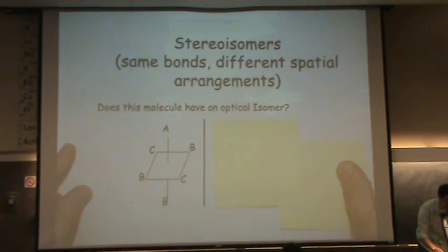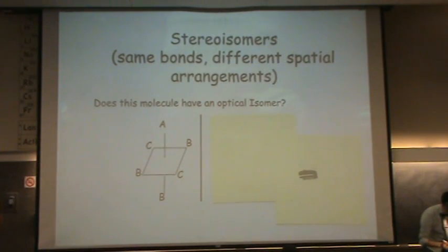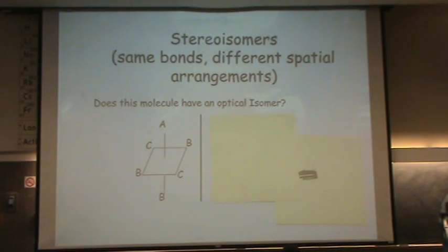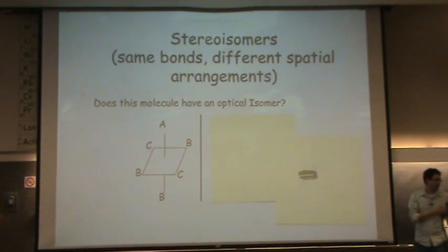Any questions? Try another one, and then we'll take a little break. On the previous one, the little trick is the A atoms were trans. When you get those A atoms as trans, it's not going to happen. So whenever you have a trans anywhere in there, it's not going to be chiral.